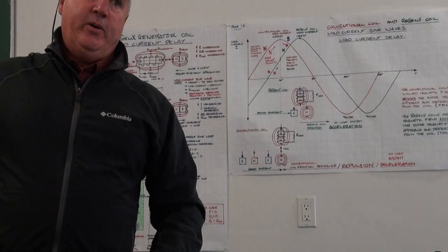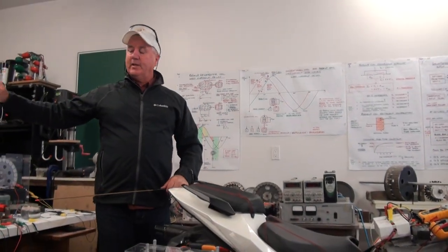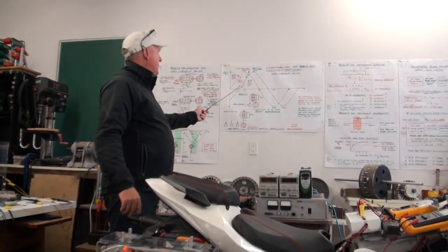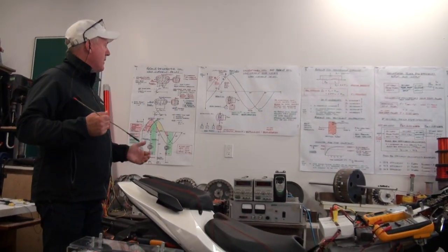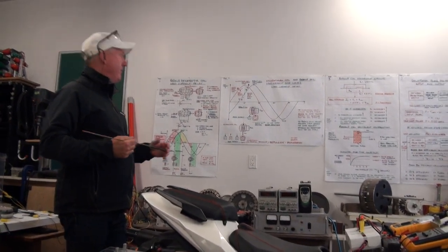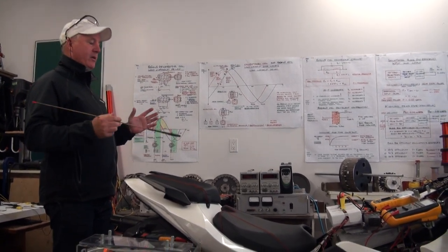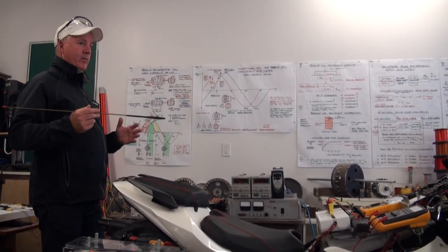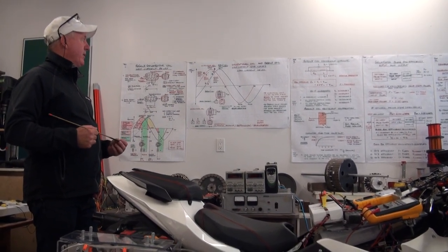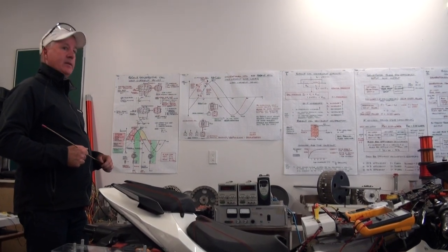In the other prototypes, only a Regenexx coil is used, but as an explanation tool this demonstrates where the load current delay comes from and how it reverses generator armature reaction — regenerative braking motor action in a generator — allowing the Regenexx coil to operate at infinite efficiency.